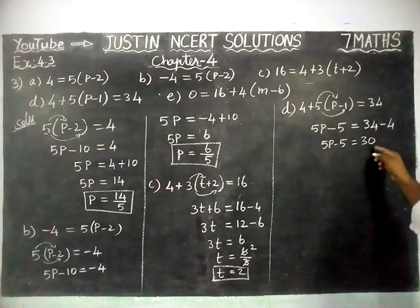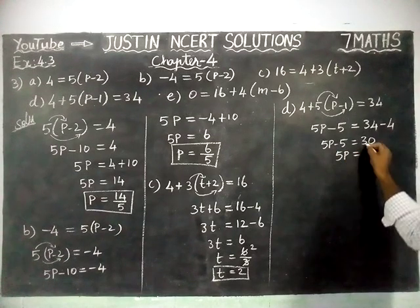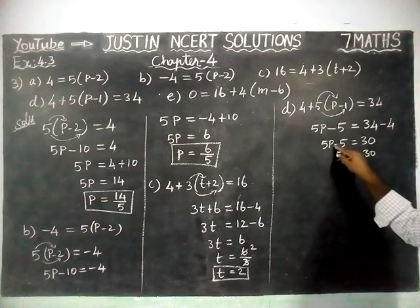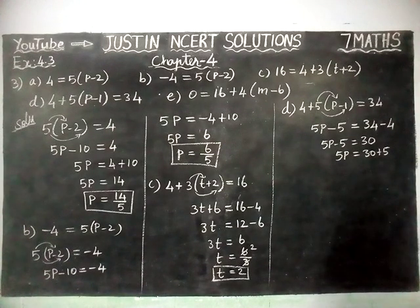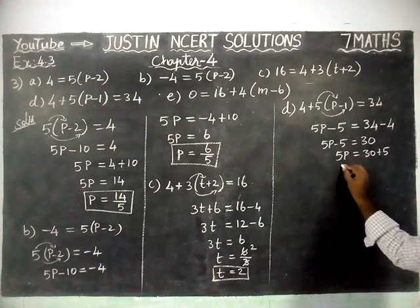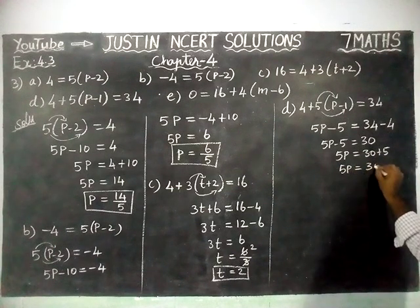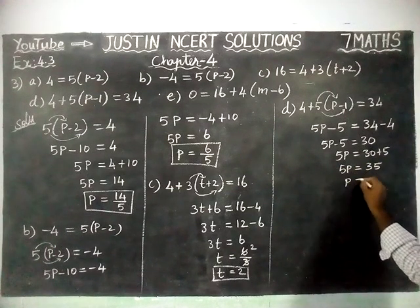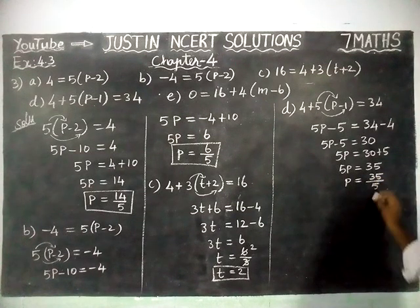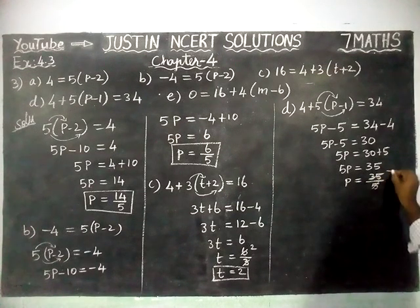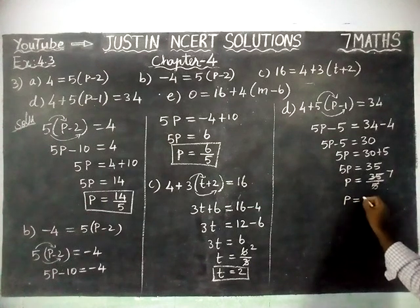We are going to take this 5 to the right hand side. So 5P is equal to 30, and minus 5 becomes plus 5 now. When it goes to the right hand side, it will become plus. 5P is equal to 30 plus 5, which equals 35. P is equal to 35 divided by 5. 1 five is 5, 7 fives are 35. So value of P is equal to 7.